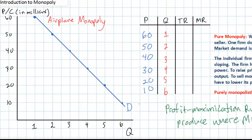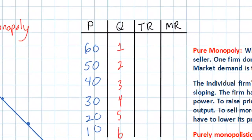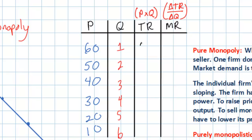To illustrate why, let's look at the table on the right. We can find total revenue at any level of output by multiplying price times quantity. Once we know total revenue, we can find marginal revenue — the change in total revenue divided by the change in quantity. The total revenue of the first airplane at 60 million dollars is 60 million dollars. At the second airplane, total revenue increases to 100 million dollars — 50 million dollars times two airplanes sold. Let's fill in the rest of the column.